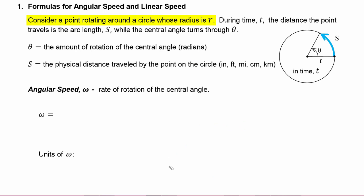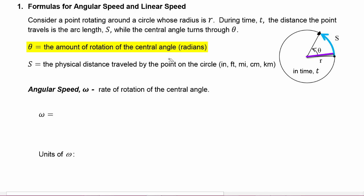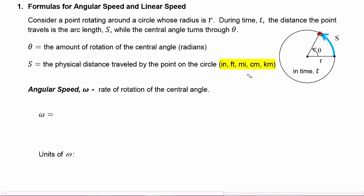Consider a point rotating around a circle whose radius is R. Here's our circle, the radius is R. During time T, the distance the point travels is the arc length S. So the point is out here on the circle and it travels a physical distance equal to the arc length S. The central angle will turn through an angle of theta during that same time. Theta is the amount of rotation of the central angle, so that will be in radians. S is the physical distance traveled by the point on the circle, so S is going to be in units of inches, feet, miles, centimeters, kilometers, meters — physical units of length.